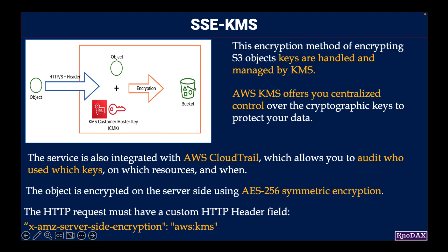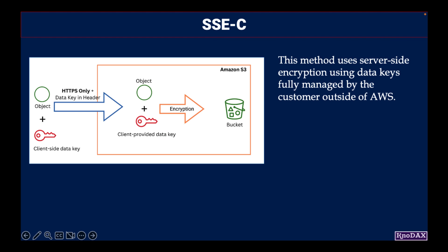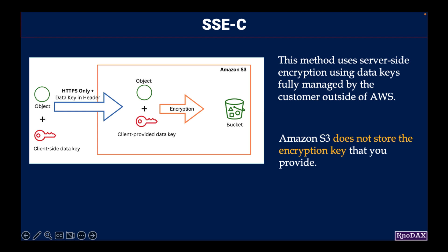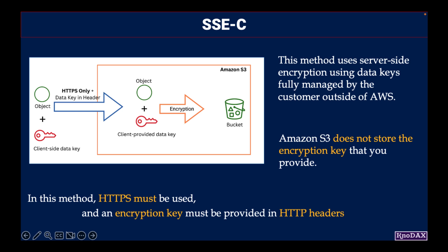Now let's see SSE-C. The SSE-C method uses server-side encryption with data keys that are fully managed by the customer outside of AWS. Amazon S3 does not store the encryption key that you provide. In this method, HTTPS must be used and an encryption key must be provided in HTTP headers for every HTTP request.